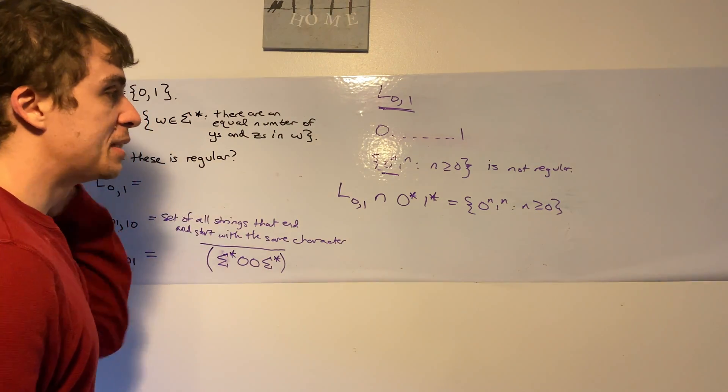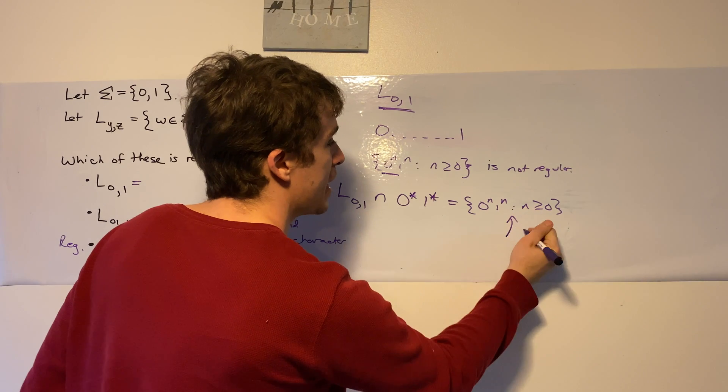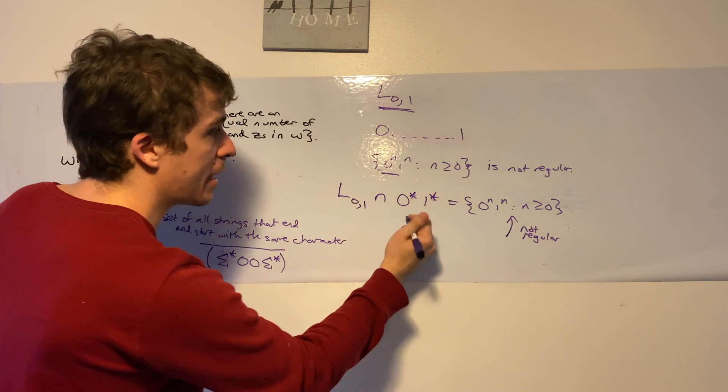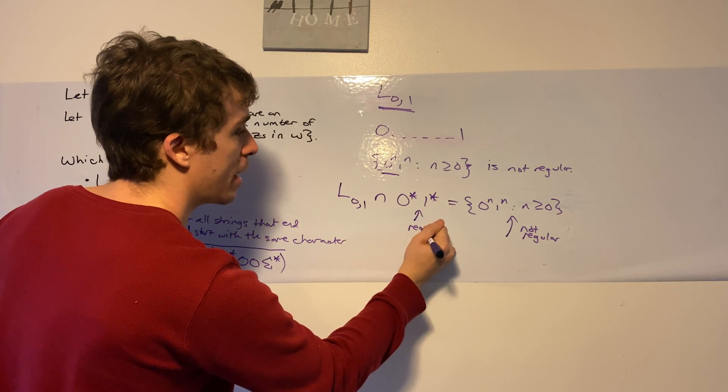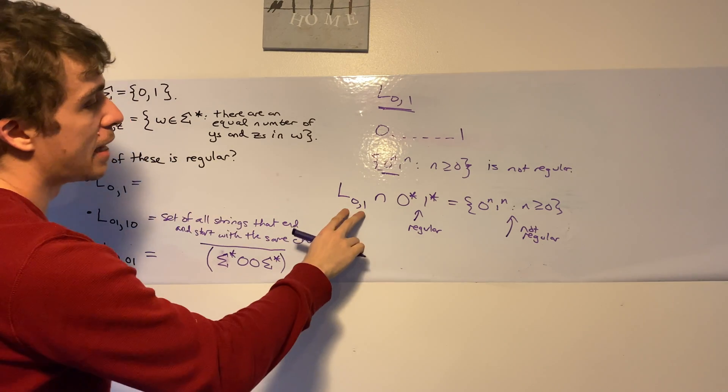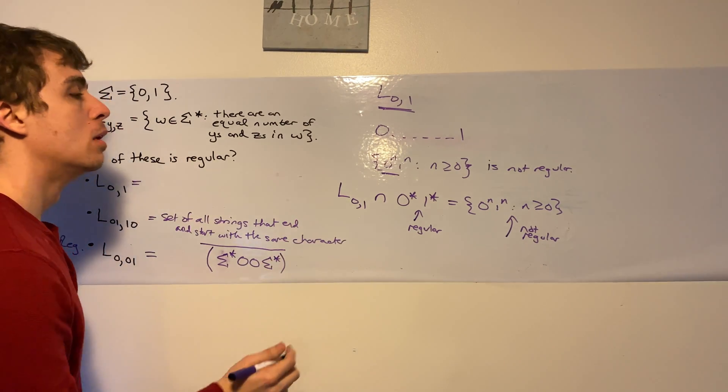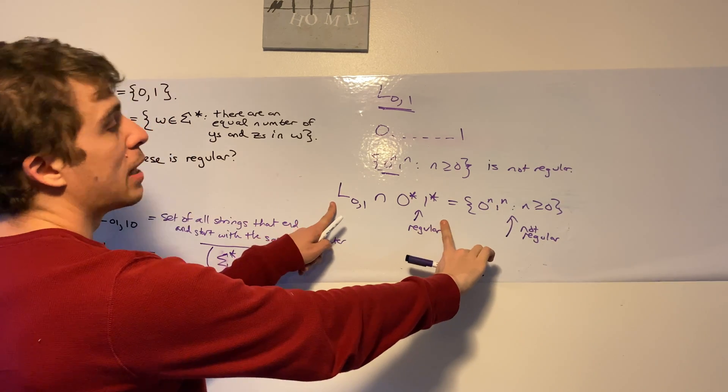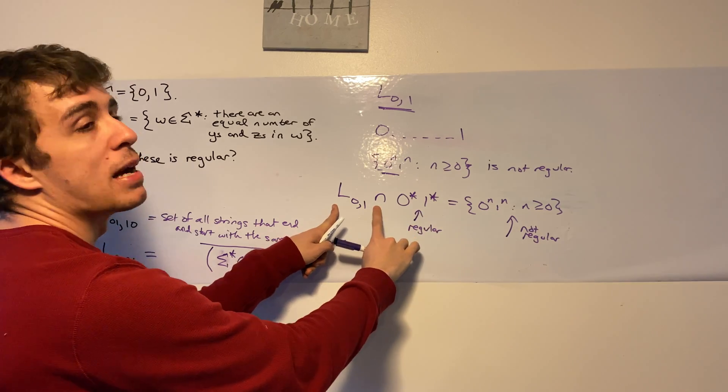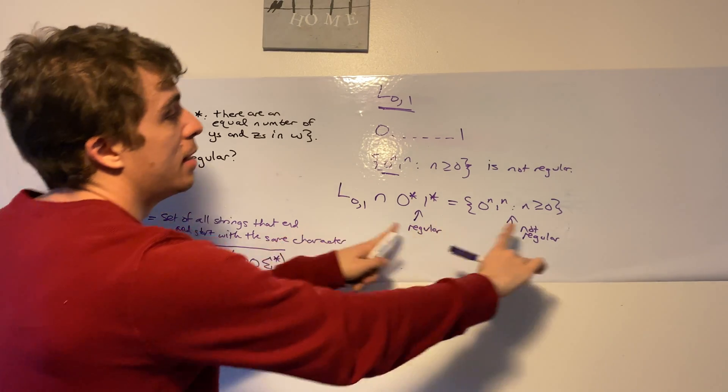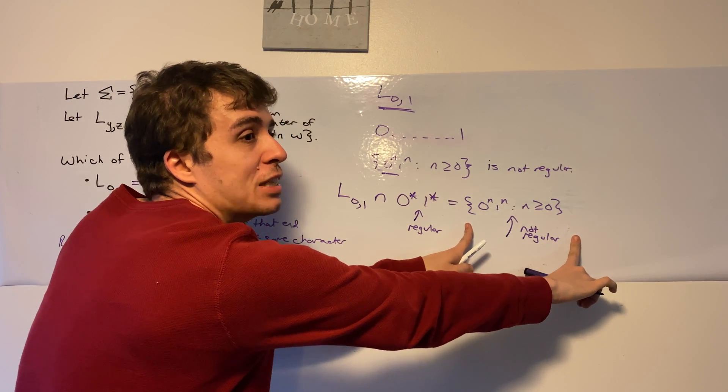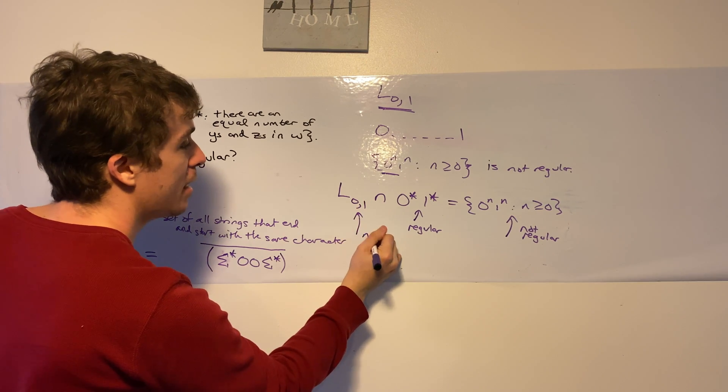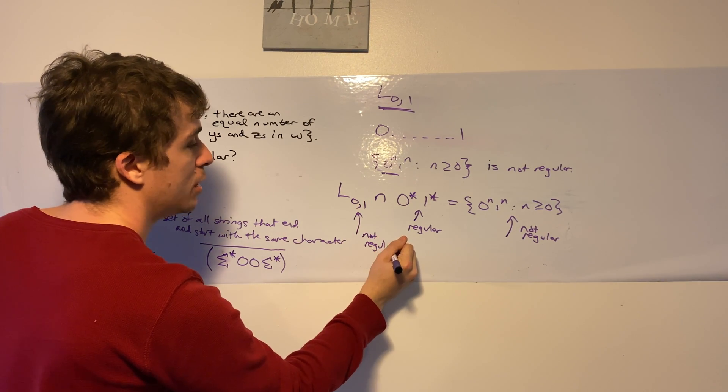But this tells us something interesting. This guy is not regular. This one is regular because it's a regular expression. So then now our question is, is this one regular? Suppose it is. Suppose that this is actually regular. Well, this whole left side must be regular because we have closure under intersection. But then that would mean that it's equal to a language that is not regular, which is not possible.